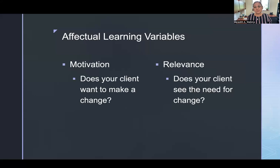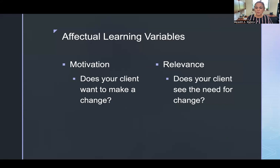There are two effectual learning variables — beliefs and values that can get in the way of learning. The first is motivation: does your client even want to make a change? Are they motivated? The second is relevance: why is this change necessary? Going back to the newly diagnosed type 2 diabetic — if a patient is drinking three Coca-Colas every day, do they want to stop and switch to water? Do they see that it's important to do so? If the patient loves their Coca-Cola and doesn't see how it affects their life, they may not be interested in learning. Ask yourself: is my client motivated, and do they see the topic as relevant?